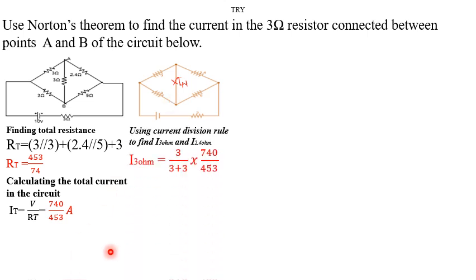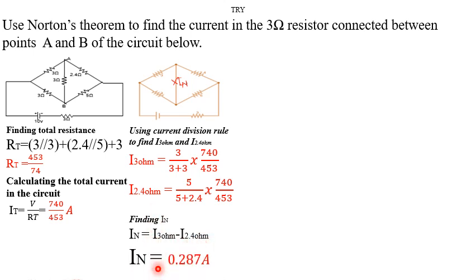So doing that, we find the current flowing through the 3 ohm resistor by using this. Then we find the current through this 2.4 ohm resistor by applying current division. Then we finally find the value of IN by subtracting it from the current through the 3 ohm resistor and the 2.4 ohm resistor. Then to get an answer of 0.287 amperes.